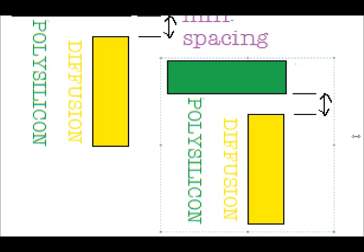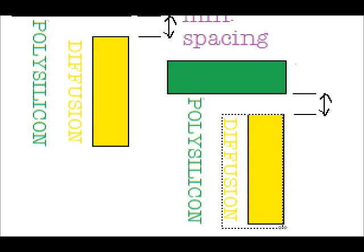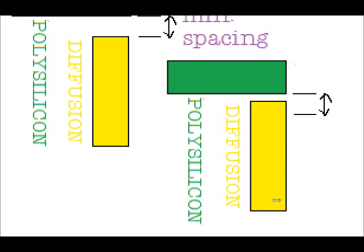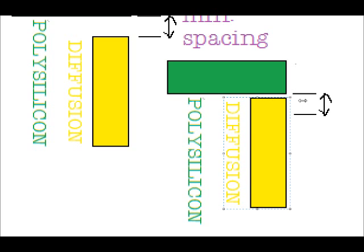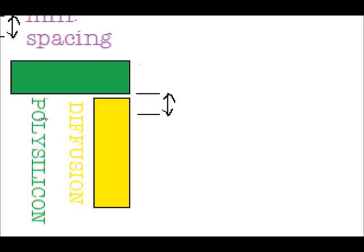Now in this instance I'll move the diffusion polygon closer to the polysilicon such that the minimum spacing rule is violated. This is drawn using the CAT tool. Let's watch what happens if we send this layout for fabrication.